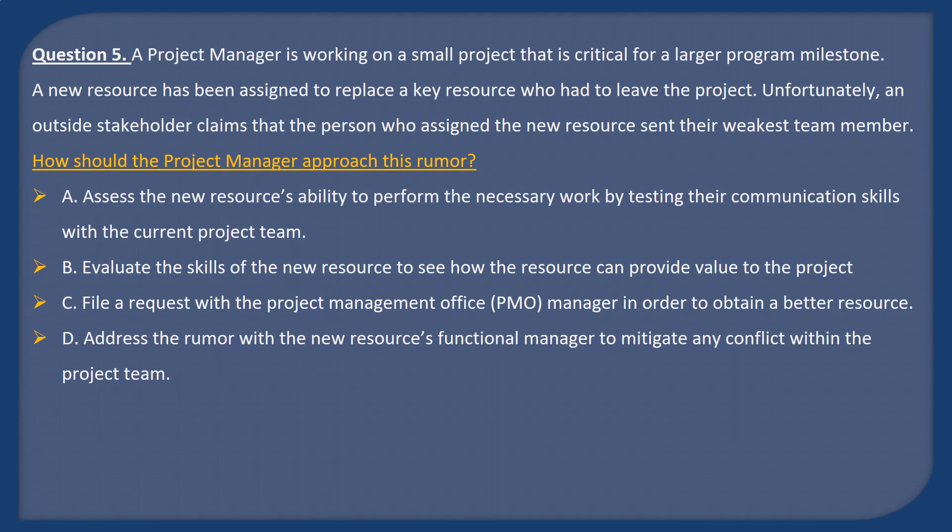Question 5. A project manager is working on a small project that is critical for a larger program milestone. A new resource has been assigned to replace a key resource who had to leave the project. Unfortunately, a disgruntled stakeholder claims that the person who assigned the new resource sent their weakest team member. How should the project manager approach this rumor?